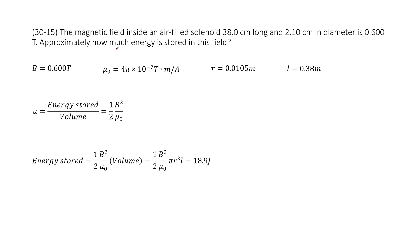So there you can see, we need to find how much energy is stored in a magnetic field. The quantities given are B and μ₀, which is a constant. We also know the diameter of a solenoid, so we can write it as the radius and the length of the solenoid.